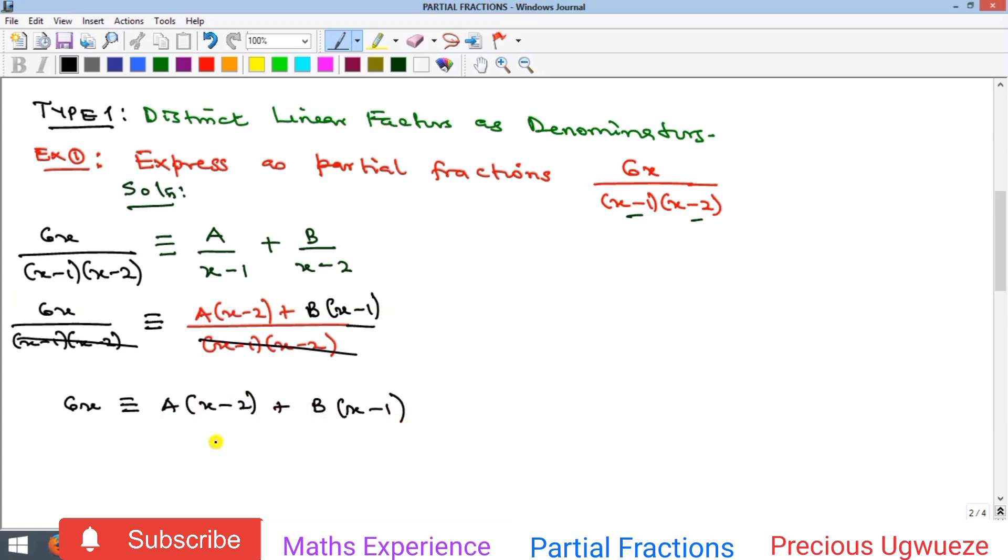Here we'll apply the methods we considered for identical polynomials to solve for A and B. I'm going to use the second method, which says to eliminate one of the constants and then solve for the other. If I decide to eliminate B...